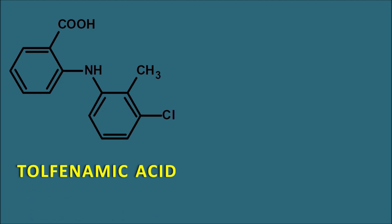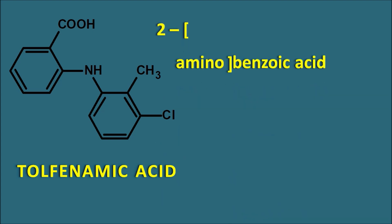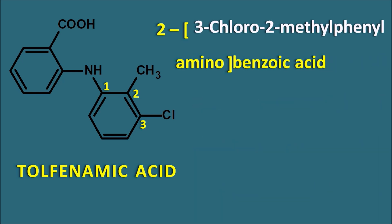The next drug is tolfenamic acid. In tolfenamic acid one of the methyl groups is replaced with a chlorine. We write the same base name 2-aminobenzoic acid and number the side chain 1-2-3. The second position has a methyl group and the third position has a chloro group, arranged in alphabetical order: 3-chloro-2-methylphenylamino)benzoic acid is tolfenamic acid.